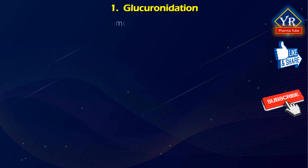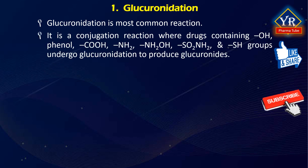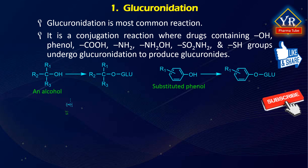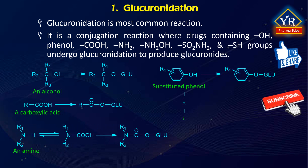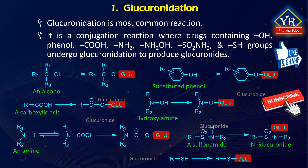Glucuronidation is a major and very frequent reaction of phase 2 drug metabolism. It is the conjugation reaction where a wide range of drugs containing alcohol, phenol, carboxylic acids, amines, hydroxylamines, sulfonamides and thiol groups can undergo glucuronidation. The products produced from these reactions are called glucuronides.